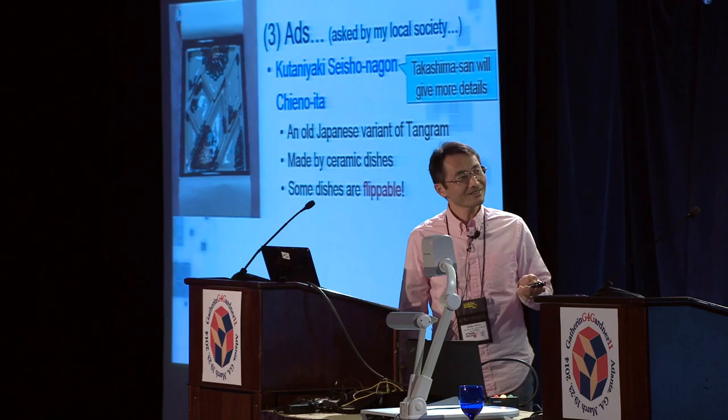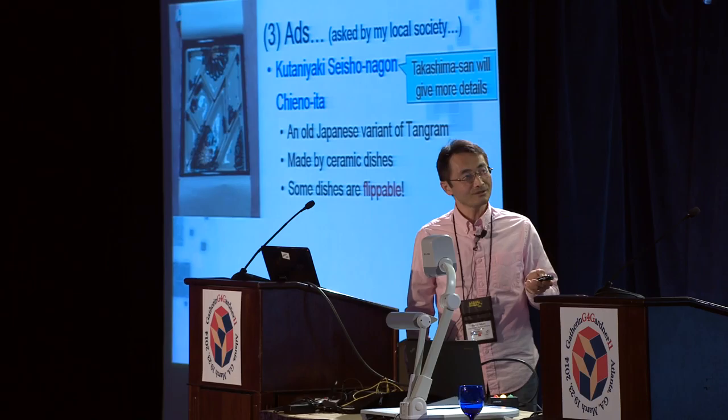the area of JAIST is very famous for such kinds of dishes, made by ceramic. So recently, we proposed and made some dish sets. One dish is here, and the other dishes are over there. So you can check the real one. This is very, you can see that this is similar to kind of tangram, but this pattern is not the tangram. I mean, this is a very old Japanese variant of tangram, so a bit different. And they are made by very nice ceramic dishes. And you can check that to make whole patterns. Sometimes you have to flip some dishes. This guy and this guy, maybe.